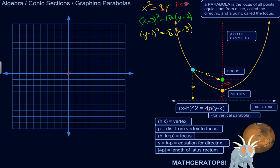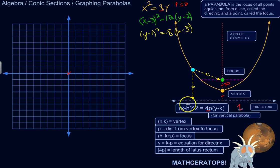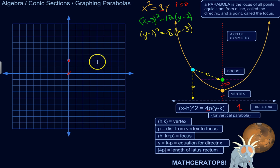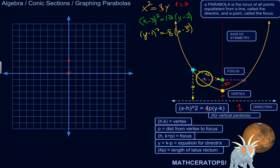So p is positive 2. Since the x part is being squared and the y part is not, we know this is a vertical parabola. The focus is 2 units above the vertex. Now we know where the focus is and where the vertex is — that's a point on the parabola. We can use the latus rectum to plot two more points.